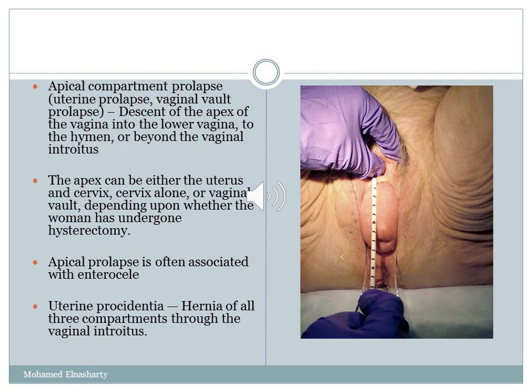Apical compartment prolapse can be uterine prolapse or vaginal vault prolapse in the case of hysterectomy. It is the descent of the apex of the vagina into the lower vagina, to the hymen, or beyond. As shown in the diagram, this apex can be either the whole uterus, the cervix alone, or the vaginal vault. Apical prolapse is usually associated with enterocele, and also with both anterior and posterior compartment prolapse.